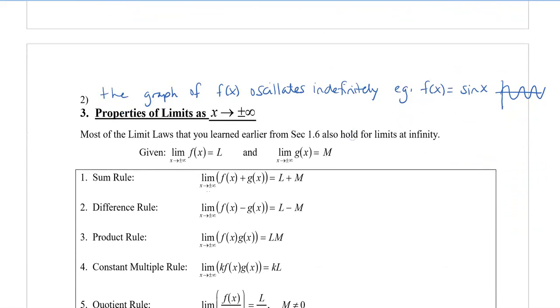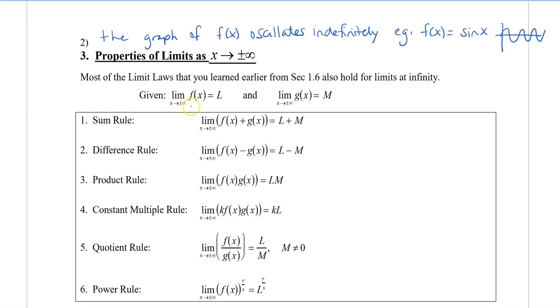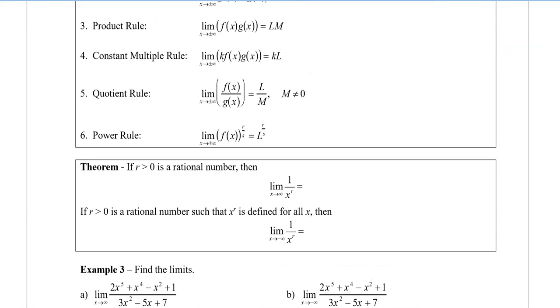We're going to take a look at some more examples. All the properties that you've learned with all the limit laws way back when we were doing limits, they still apply here. The sum rule, the difference rule, the product rule, constant multiple rule, the quotient rule, and the power rule, they still apply when x approaches positive or negative infinity. A couple of theorems here. If r, the exponent in the denominator for the variable, is a rational number, as x approaches infinity, then that means our denominator is getting very large, and the limit is going to approach 0. This is the same if r is a rational number such that x to the r is defined for all x, and even when I approach negative infinity, 1 over something that's very large is still going to be 0.